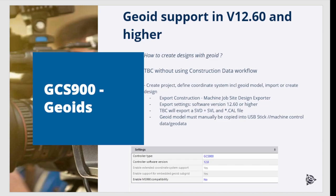There are different ways of creating designs with GeoEat support, depending on your workflow. For example, if using TBC without the construction data workflow, the following steps are required: create a project, define a coordinate system which includes a GeoEat model, and import or create a design. Then select Export > Construction > Machine > Job Site > Design Exporter. It is important to select software version 1260 or higher in the export settings. TBC will then export an SVD, SVL, and CAL file together — the CAL file will reference a GeoEat file. This GeoEat model must then be manually copied onto the USB stick into the Machine Control Data GeoData directory.